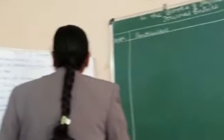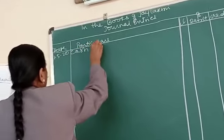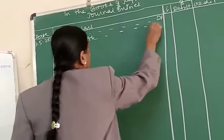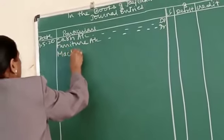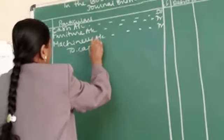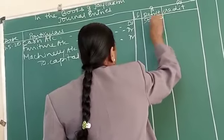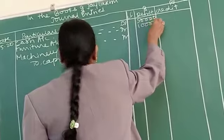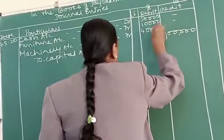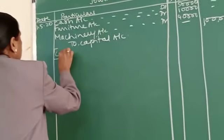So the journal entry will be — write the date 1-5-2020. Cash account debit, furniture account debit, machinery account 40,000. Write the capital account in the credit column corresponding to the capital. Now write the narration — narration is nothing but a brief explanation: 'commenced business with the above'.